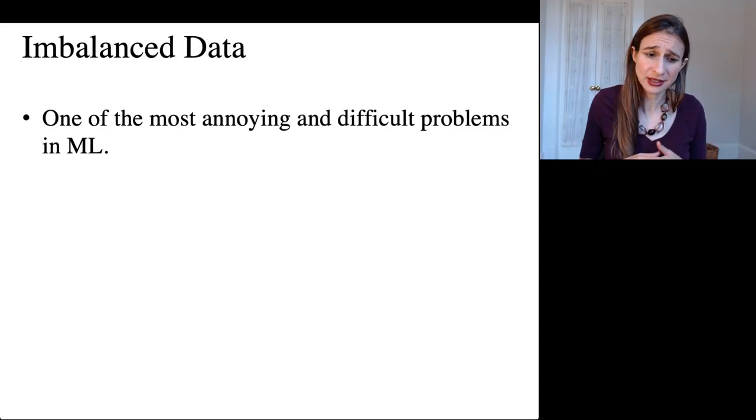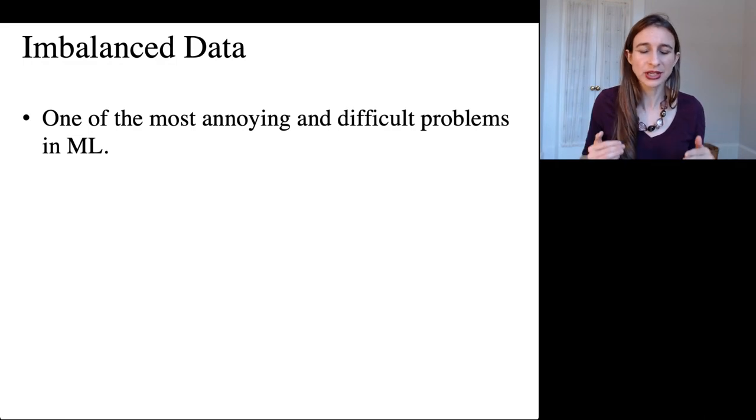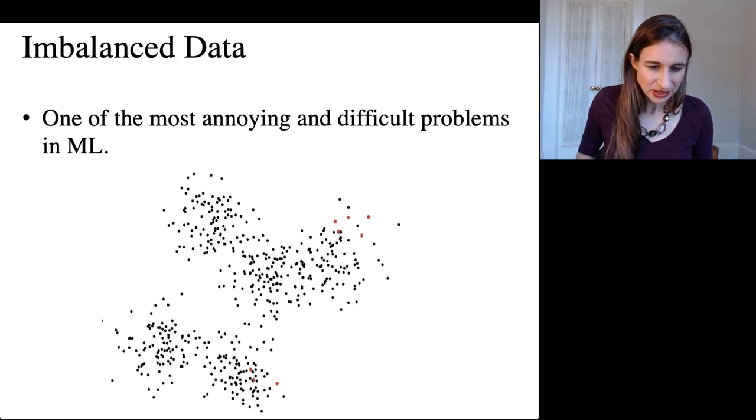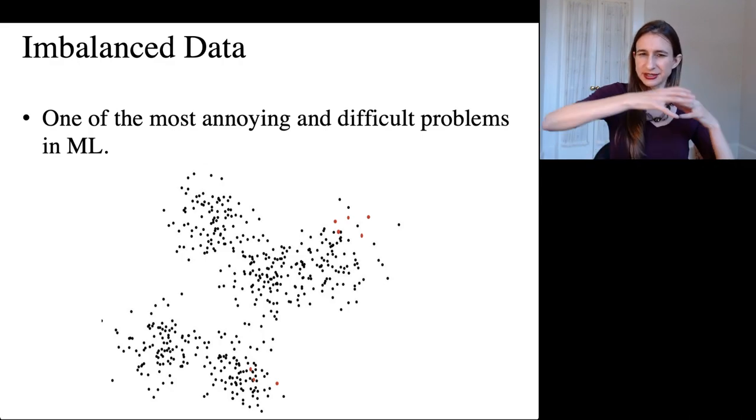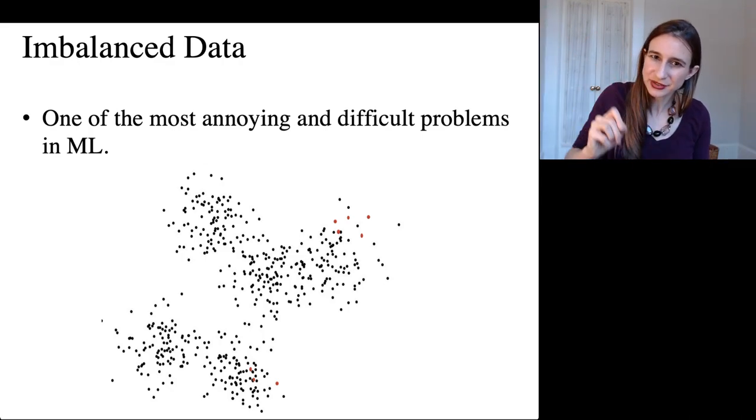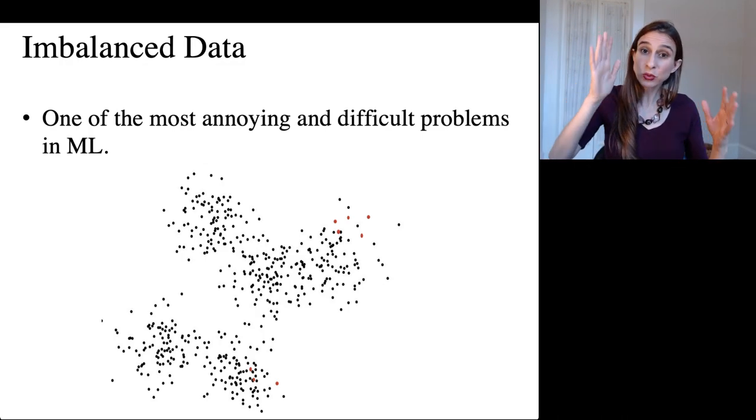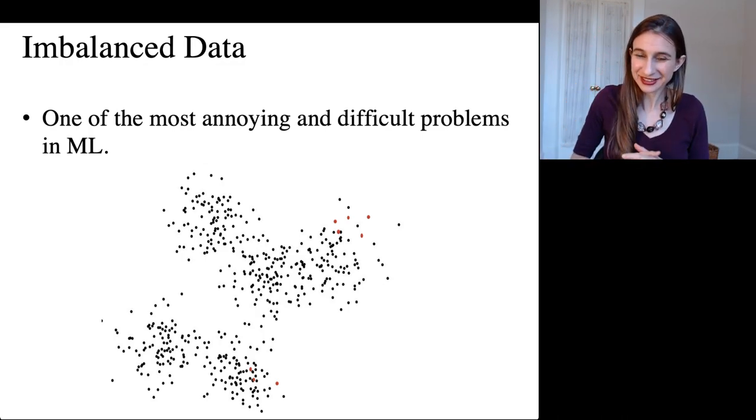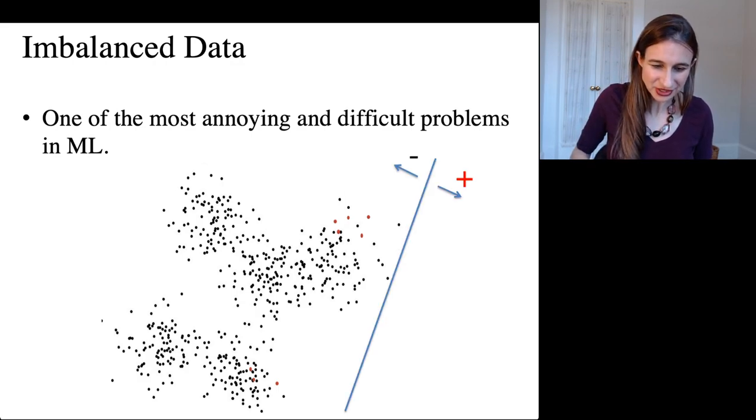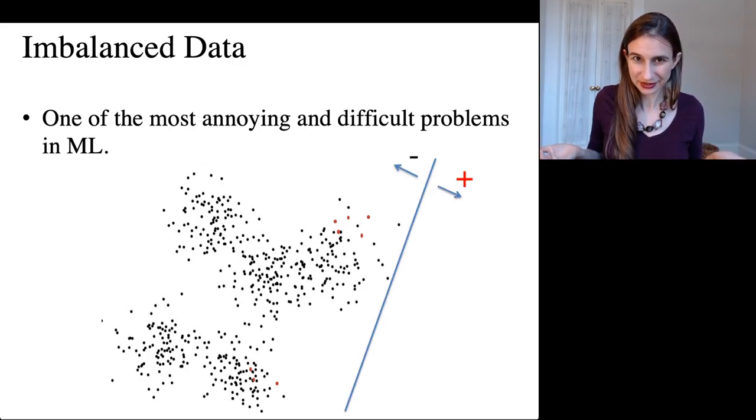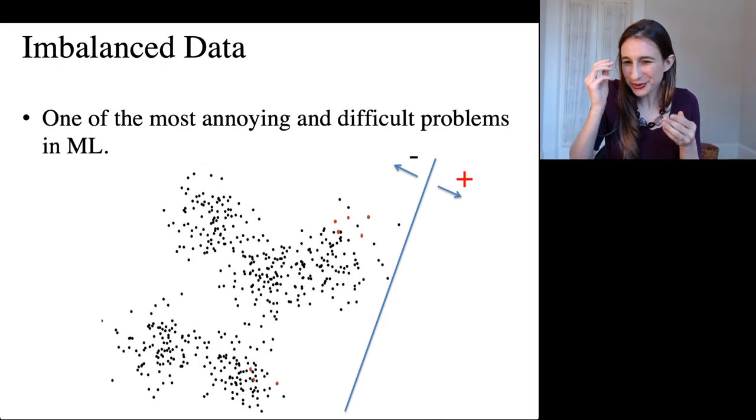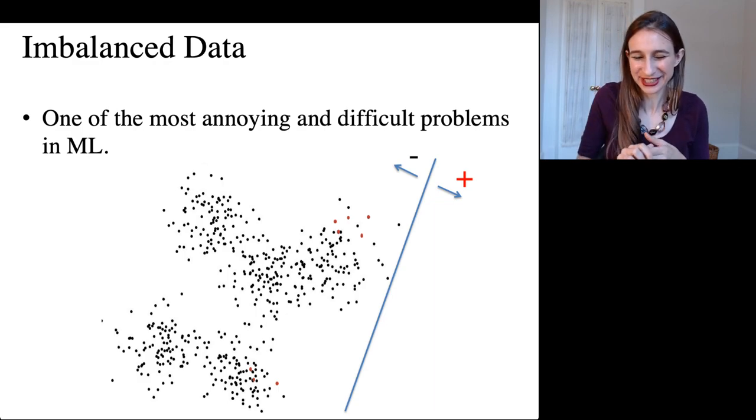Imbalanced data has been called one of the most annoying and difficult problems in all of machine learning. And here's why. If you have a data set that's highly imbalanced, so here's a sea of negatives with a few positives floating around in it, and you run a classification algorithm, then what does it do? Well, of course, it just predicts that everything is negative, because that classifier is 99% accurate, because there's only 1% of positives in the whole data set.